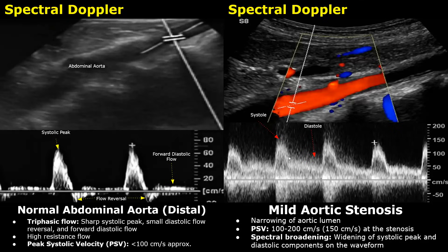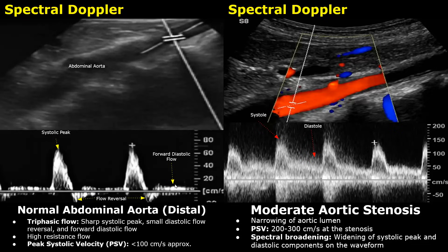This broadening and rough appearance of the waveform is called spectral broadening, and it is due to turbulent flow. There is some turbulence present because of the stenosis, which causes this spectral broadening. The turbulence is mild, so it is not prominent on color Doppler. The systolic peak appears wide and less sharp compared to the normal sharp and narrow systolic peak, and the diastolic component appears thicker than normal. If the PSV is between 200 and 300 cm per second, it is classified as moderate stenosis, and the turbulence will be prominent on color Doppler with greater spectral broadening.